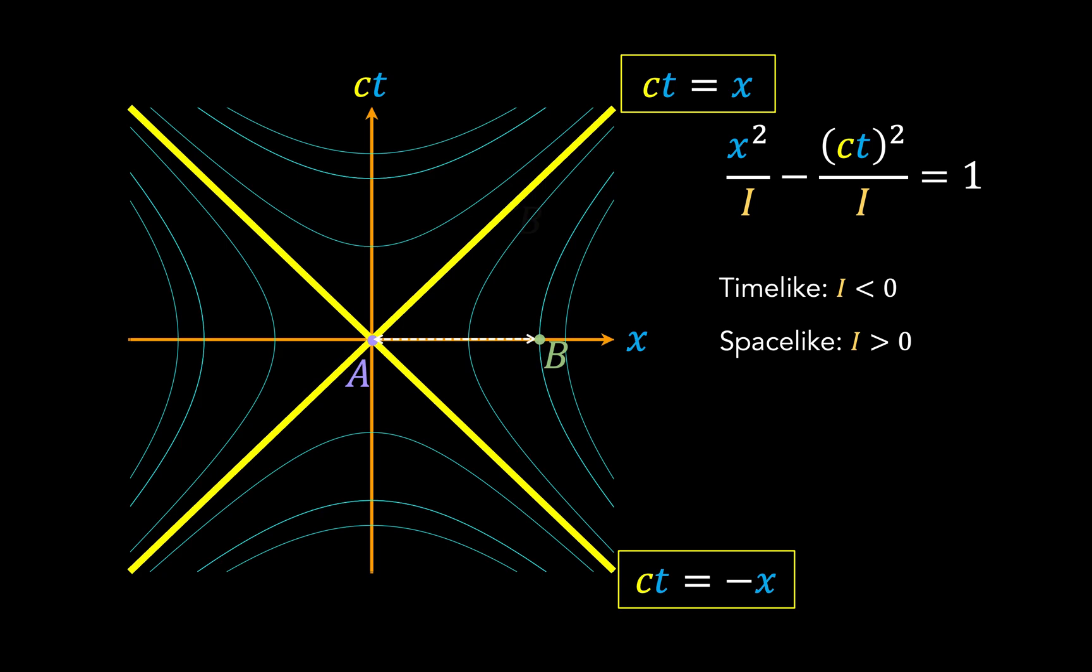And finally, if event b lies along the asymptote, then only a beam of light could possibly connect it with event a, so we call this a light-like interval.